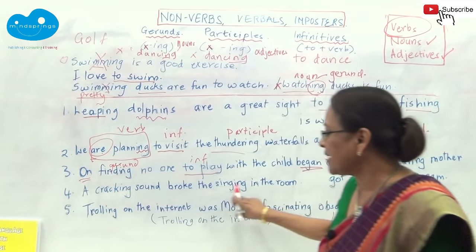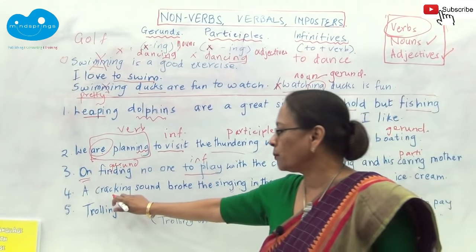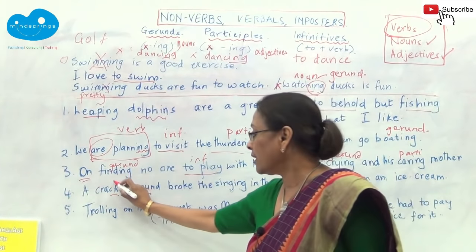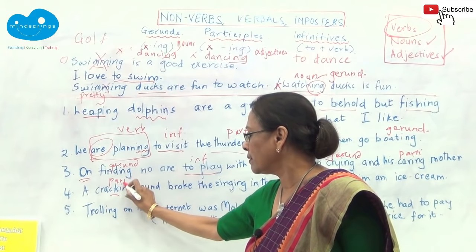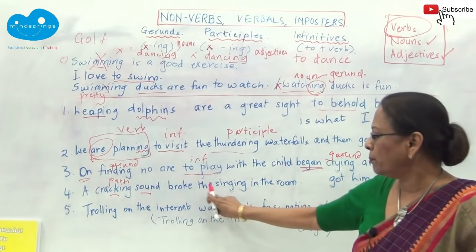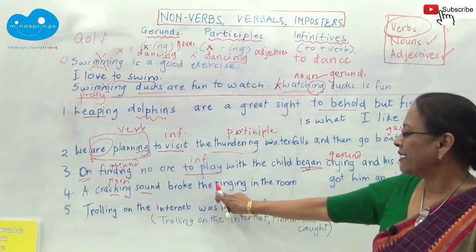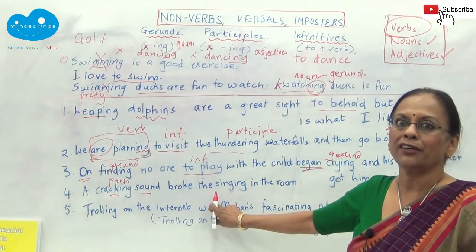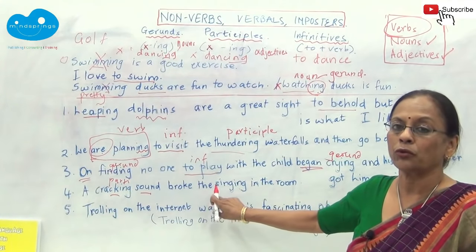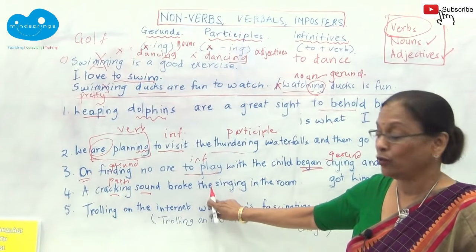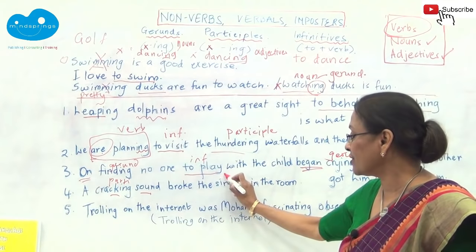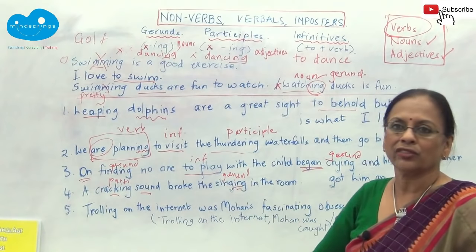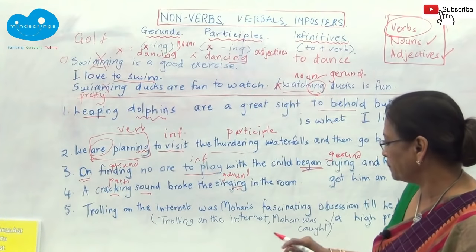'A cracking sound broke the singing in the room.' 'Cracking sound' — 'sound' is a noun, therefore 'cracking' is an adjective — a participle. 'Broke the singing' — see 'the' there. Articles can only be put in front of nouns, and therefore 'singing' here is a gerund. Why? Because it's an -ing word with an article in front of it.